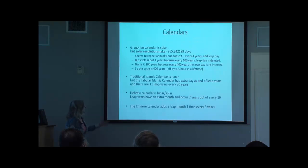The Hebrew one adds a month seven years out of every 19. That might seem really weird until you realize that we have a leap year 97 out of every 400. So we have a very long cycle.